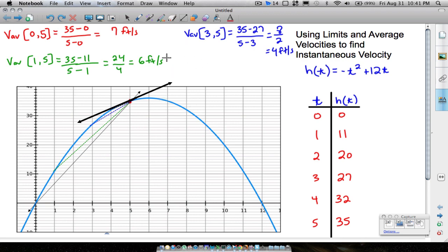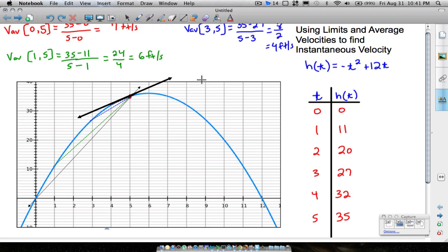So to do that, we want to make our times zero, one, three. We want to get closer and closer and closer to five. Now you can plug in more values and let's actually do that right now.